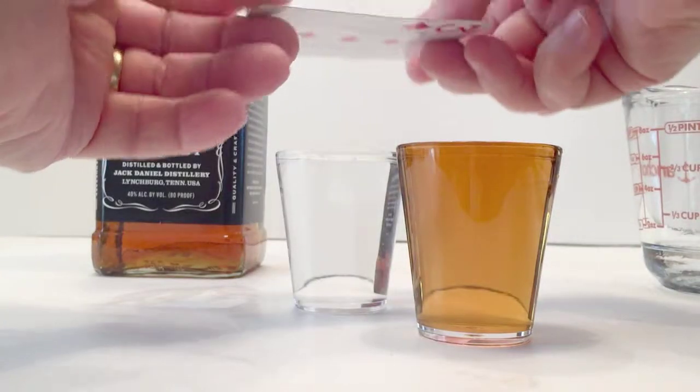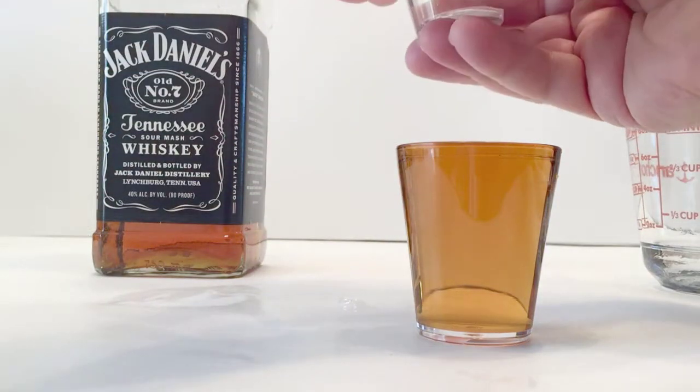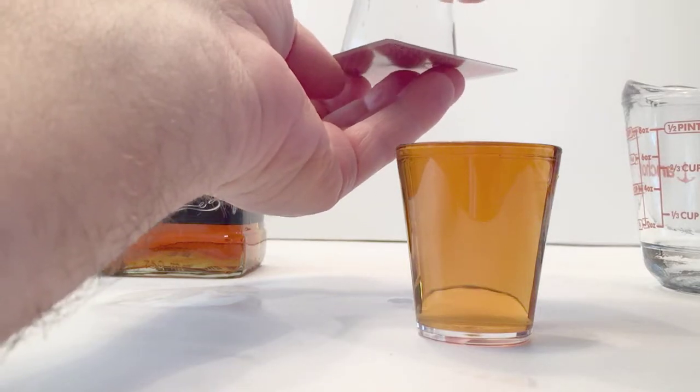Then you're going to take a card and you're going to put it on the top of the water shot glass. Turn it upside down. This is where air pressure takes over and the card should stay in place.